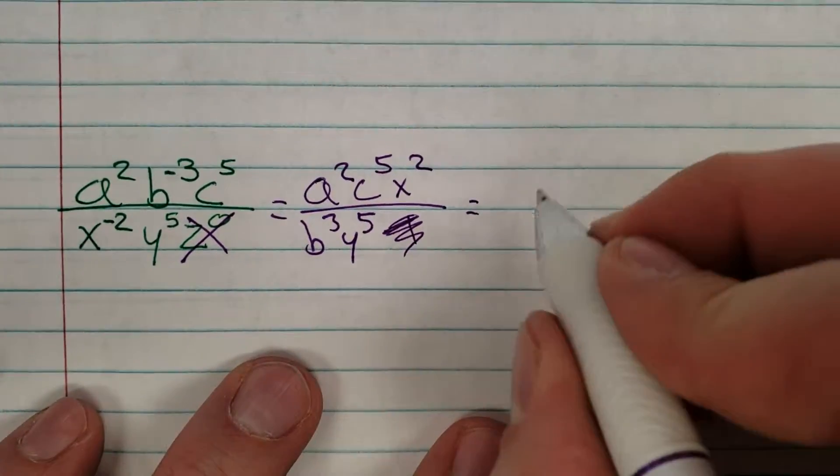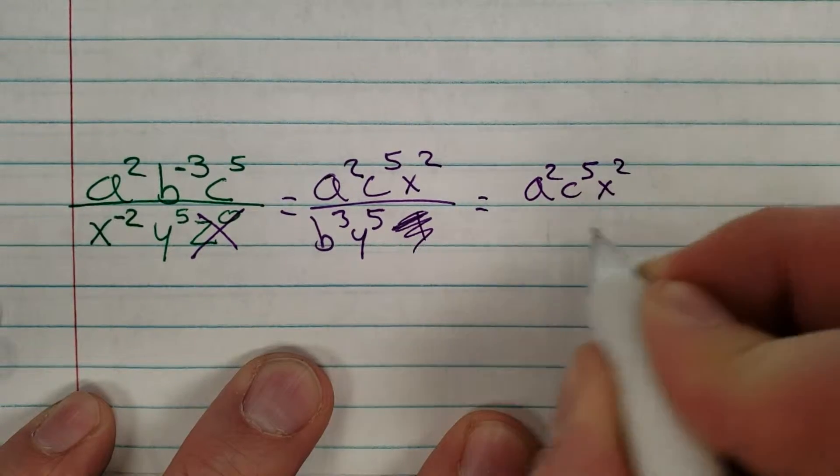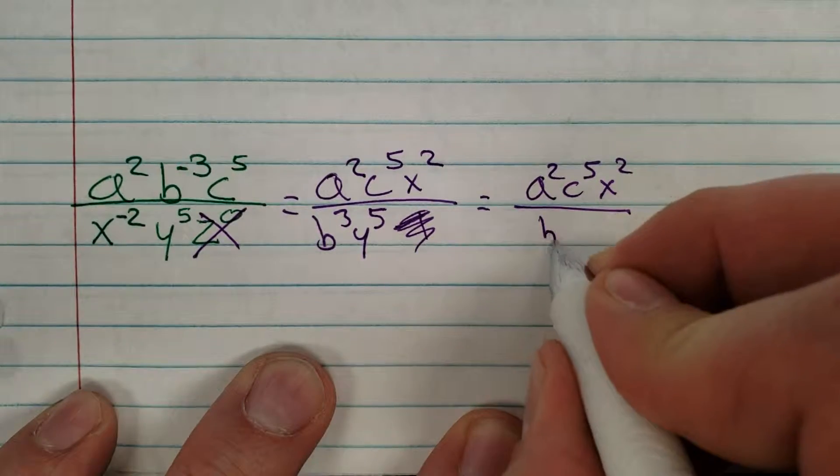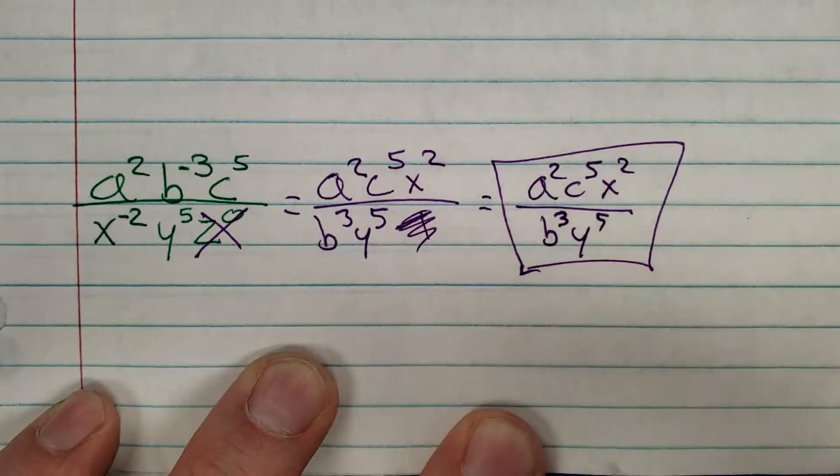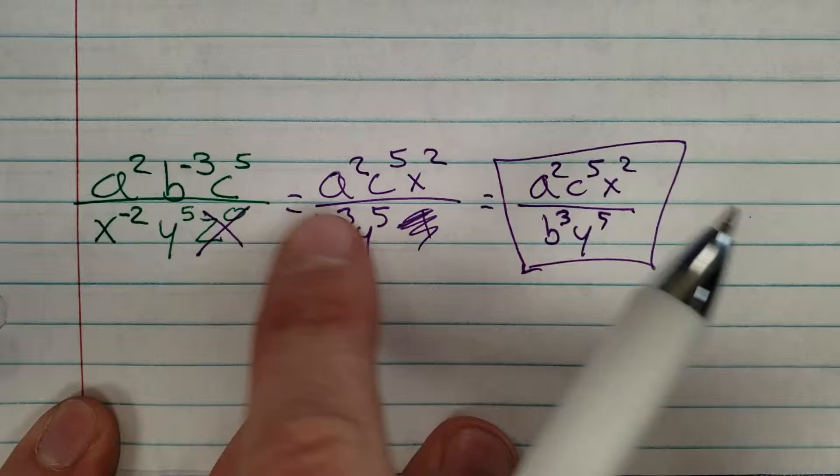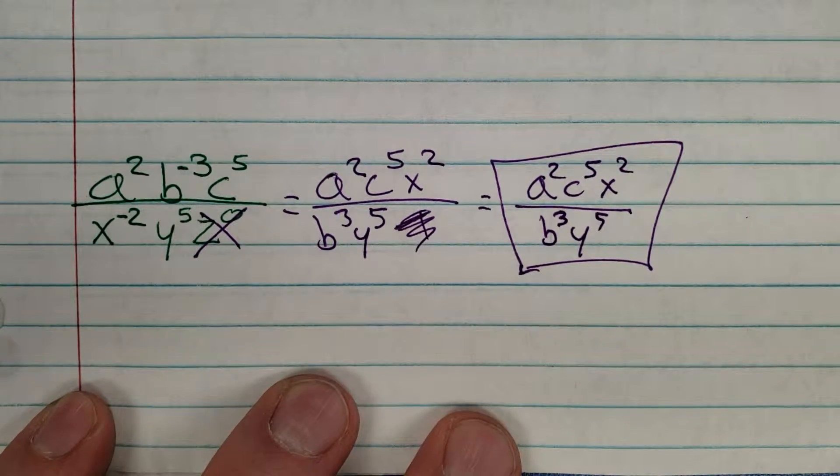If I were to clean this up and make it look a little more pretty: a squared c to the five x squared goes on top, and then a b cubed y to the five goes on the bottom. You will not even see problems half this hard, so if you can understand this process then you're going to be set in lesson 7.1.